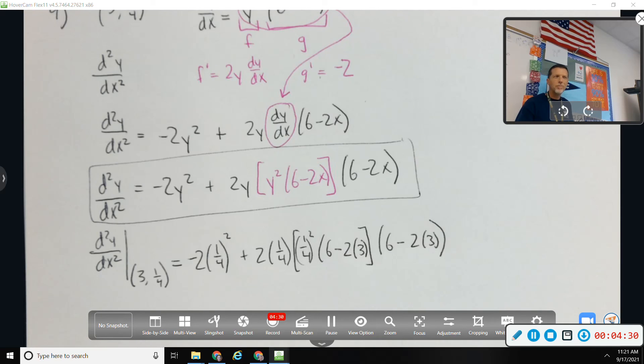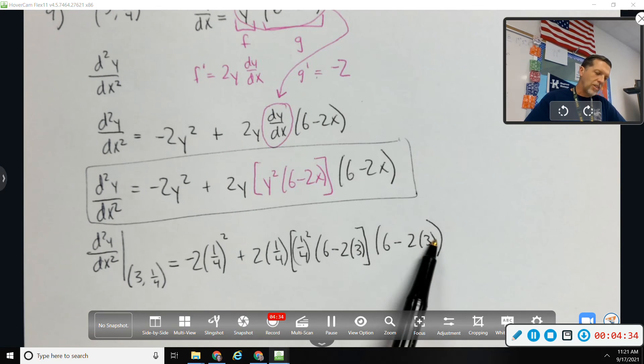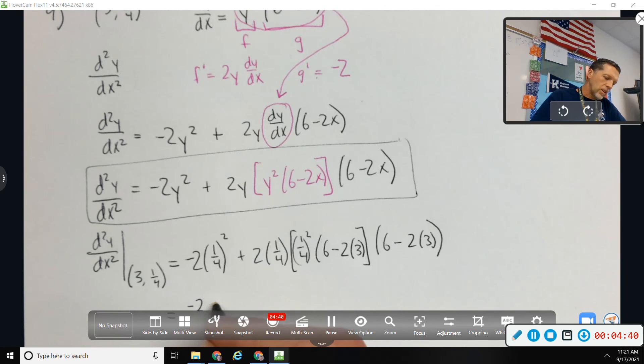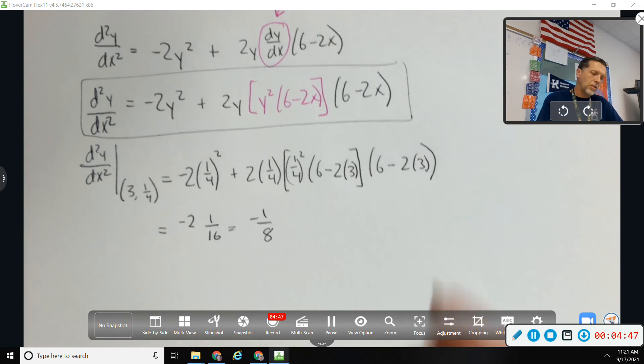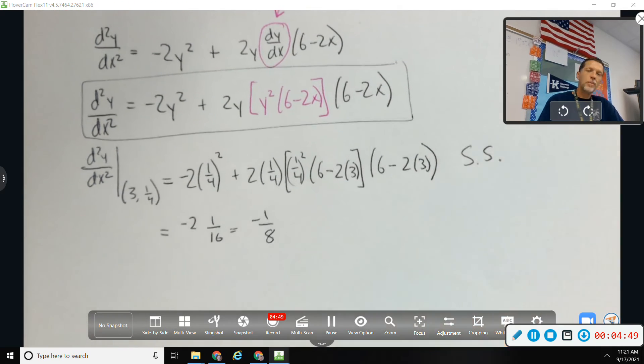6 minus 2 times 3 goes away. But 6 minus 2 times 3 is 0. And so that would wipe out all of this second part. So it would just be the first part. So negative 1, 8. But again, if you didn't see that, or didn't even want to mess with it, that's a safe stop, and that's fine.